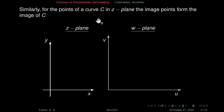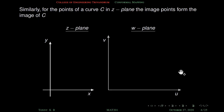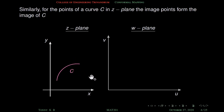Similarly, for the points of a curve c in the z-plane, the image points form the image of c. That means we consider a curve c in the z-plane, and then we consider the images of each of the points on c — their totality becomes f(c).